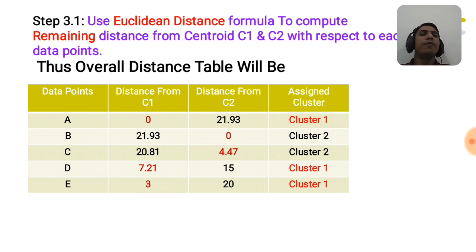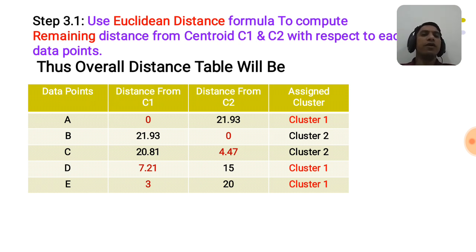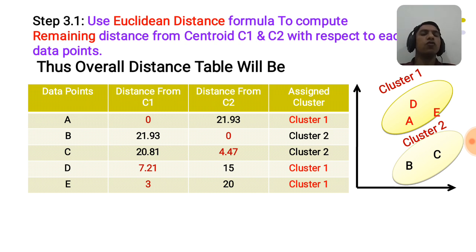Data point A has minimum distance 0, so it is grouped into cluster 1. Data point B has minimum distance 0, so it is grouped into cluster c2. Data point C has minimum distance 4.47, so it is grouped into cluster c2. Data point D has minimum distance 7.21, so it is grouped into cluster c1. Data point E has minimum distance 3, so it is grouped into cluster c1. Cluster 1 contains data points A, D, E and cluster 2 contains data points B, C.